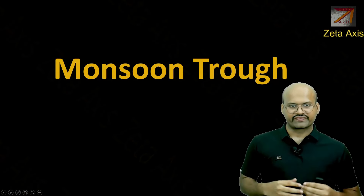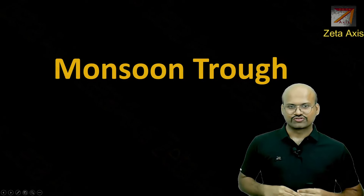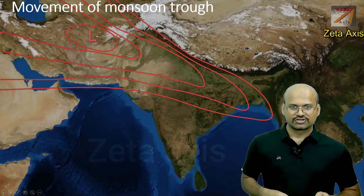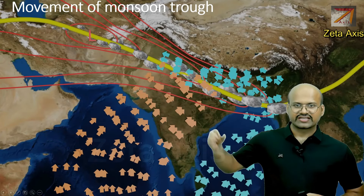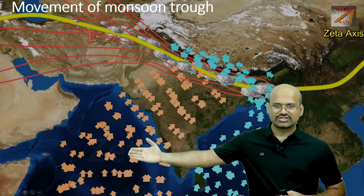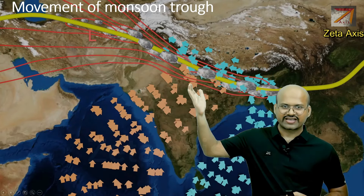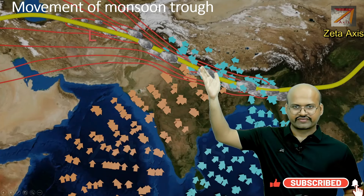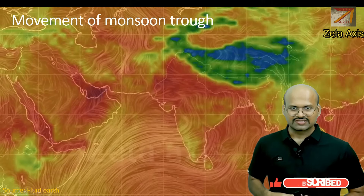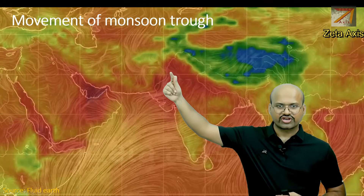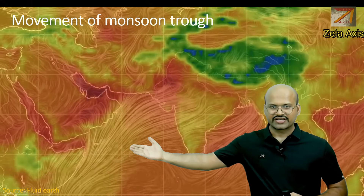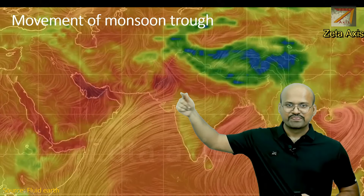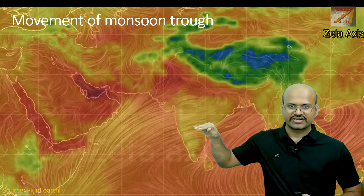Now let's see the monsoon trough. In the video on break in monsoon, we discussed how the monsoon trough moves north and south. The Arabian Sea branch moves in one direction while the wind from the Bay of Bengal branch moves north of the monsoon trough. In this video, we can clearly see the monsoon trough. Wind from the Arabian Sea branch comes in from one side, and wind from the Bay of Bengal branch comes in from another, and they meet in this region — with this boundary continuously shifting.